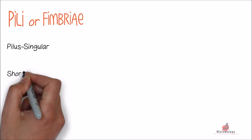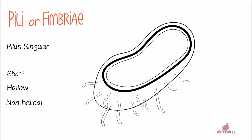Pilli are short, hollow, non-helical, and are more in number than flagella. However, they do not involve in motility, because pilli are also found in non-motile bacteria.